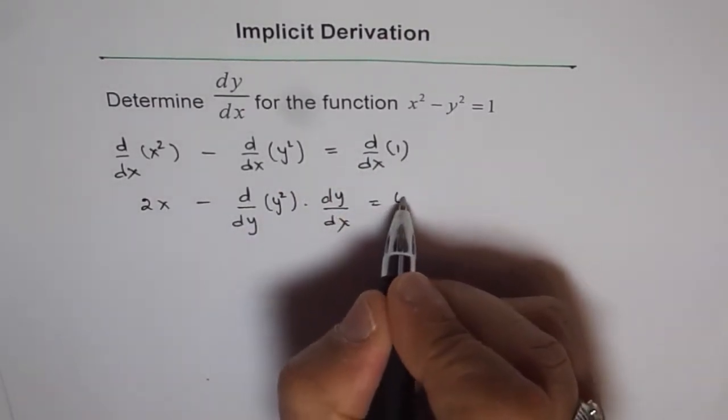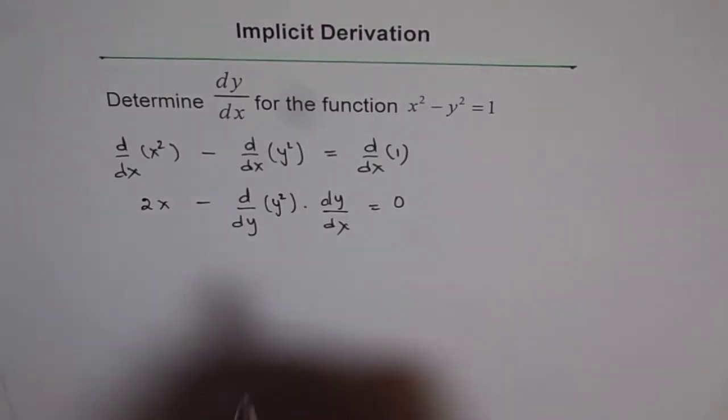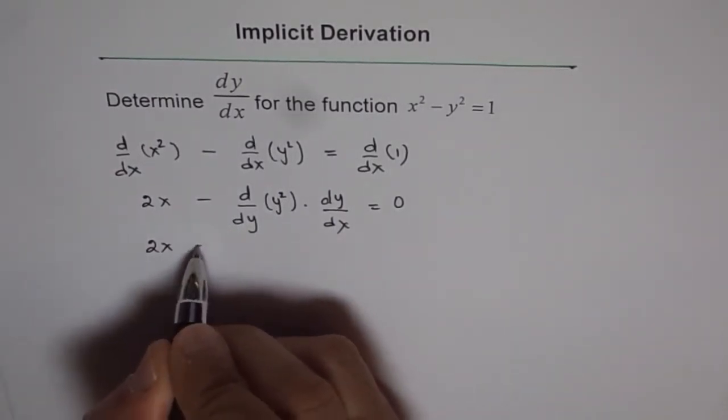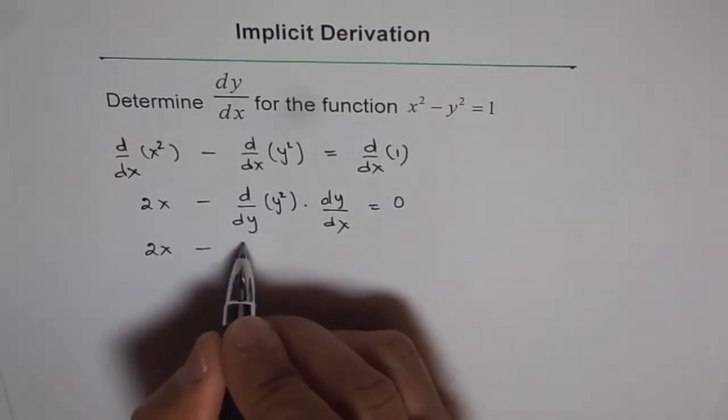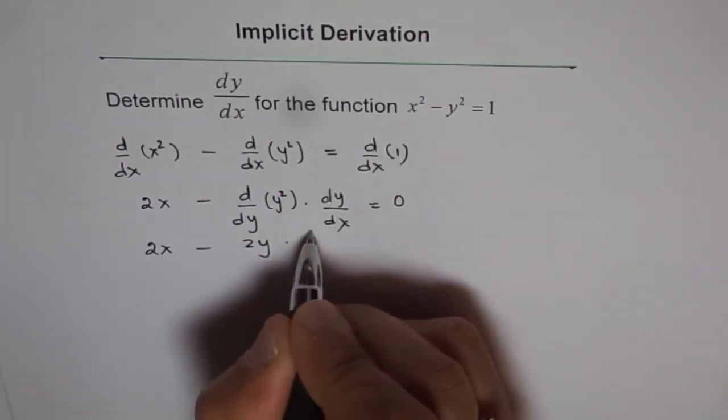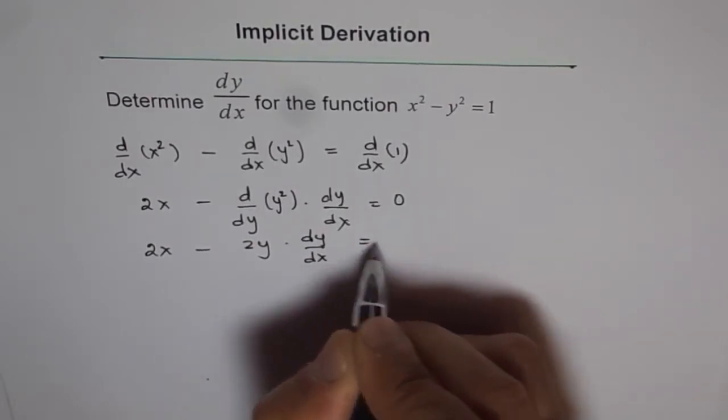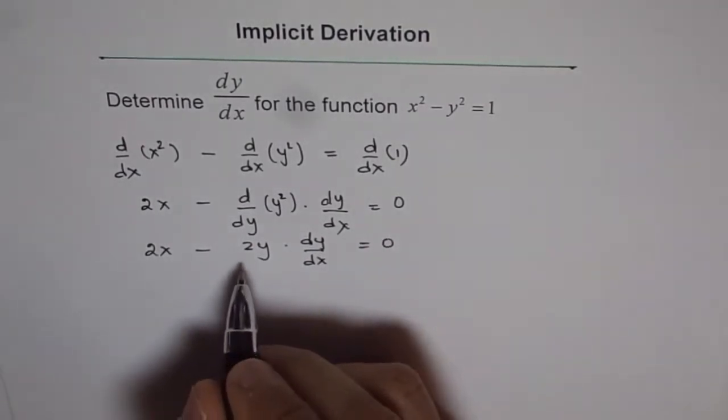And derivative of 1 is 0. Now we have 2x minus derivative of y² with respect to y is 2y times dy/dx equals 0.